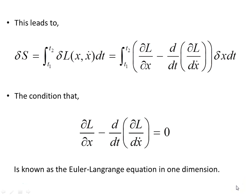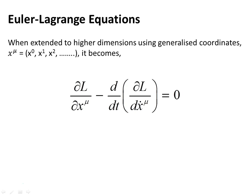If we want to generalize it, we go over here, and when we extend to higher dimensions using generalized coordinates, x^μ, x⁰, x¹, x², however many dimensions you want, it becomes dL/dx^μ minus d/dt, dL/dx dot^μ is zero. That's the Euler-Lagrange equation in generalized coordinates, however many dimensions you have, n dimensions.